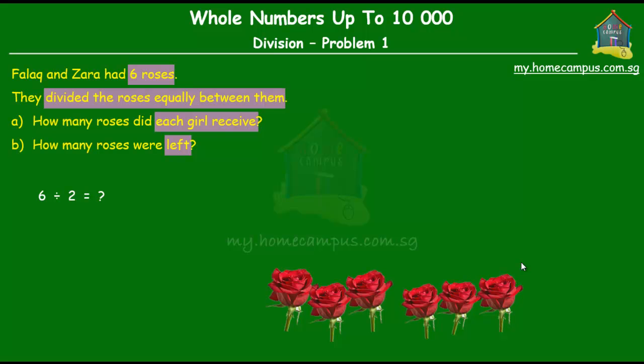Alright, so let's do that. On the right side of the screen, we'll do a working for division of six by two. Now when we do division, this is how we do it. To the left of the sign, we put two, which is the number we're going to divide it by, and on the right side of the sign, this sign over here, we will put the number six, which is the number that has to be divided.